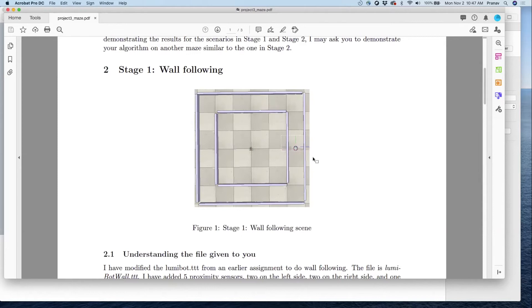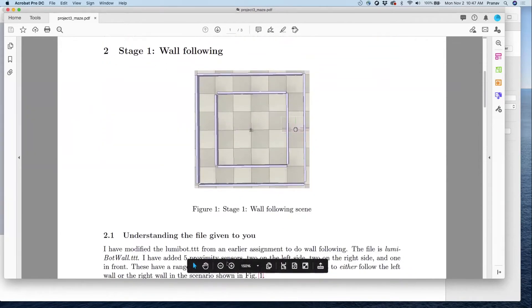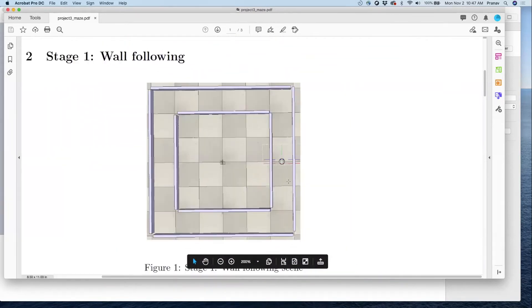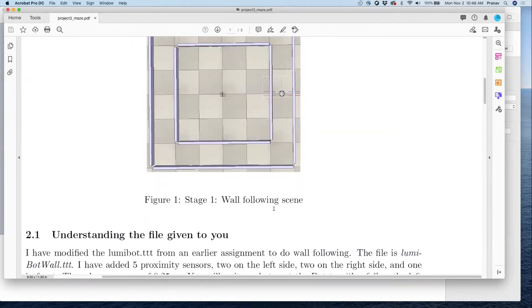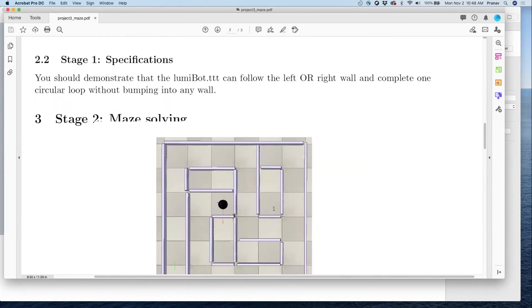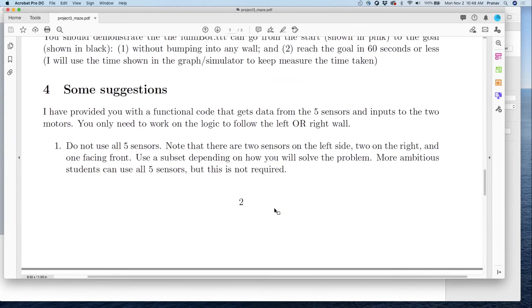I put in five sensors, more sensors than you actually need. You can see the red and the green and the red and blue lines. Those are sensors: two on the left side, two on the right side, and one sensor, the green one facing forward. I suggest you can use only two sensors, use either the left two or the right two to follow the wall and use the green one only if you have to.